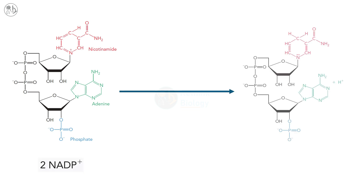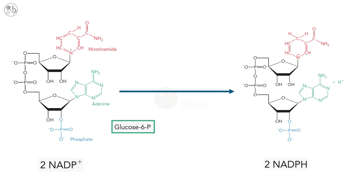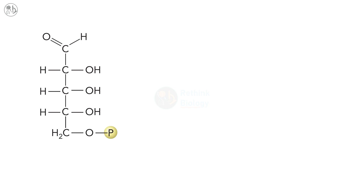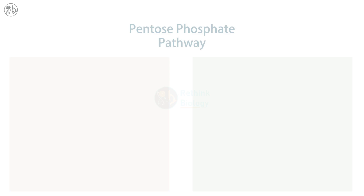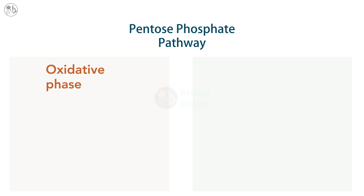The pentose phosphate pathway is also responsible for producing ribose 5-phosphate from glucose 6-phosphate. This is very important because ribose 5-phosphate is the carbohydrate component of nucleotides, precursors to DNA and RNA, and of the co-enzymes ATP, NAD+, NADP+, FAD, and acetyl-CoA.